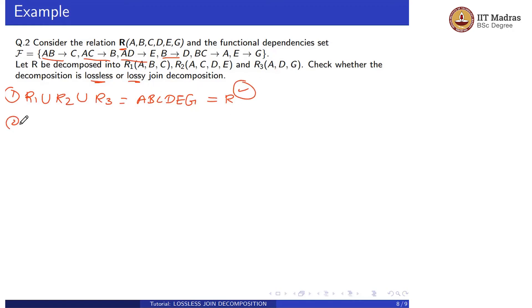Now let us check the second condition: R1 intersection R2. When there are more than two decomposed relations, we first check R1 and R2, then R12 and R3.